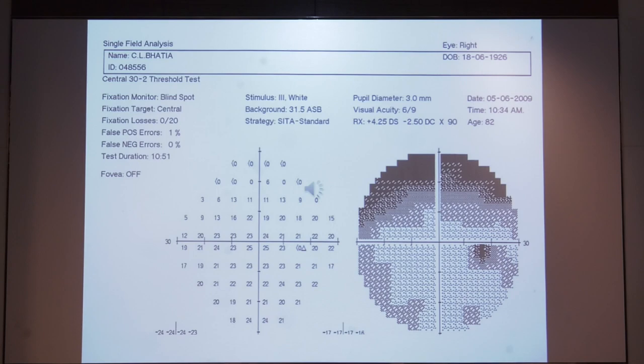The top half of the field gives the patient's name, the type of test that has been done, and the reliability indices. Fixation losses should be less than 20%. Anything more than that gets marked with a double cross. Fixation losses occur when the patient responds to a stimulus in his blind spot area. False positive errors should be less than 15%. These are normally occurring when the patient presses the trigger in the absence of a stimulus. False negative errors, more than 30% is unreliable. These happen when the patient does not respond to a previous spot that he has responded to in the past. Then it mentions the test duration, stimulus, strategy used, as well as other parameters. The date of the test is very important, and right on top is the eye that has been tested.